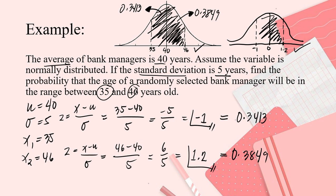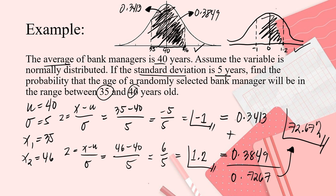So, what will you do? Since this is the whole area being asked, you will, yes, you will add the 2. So, 0.3413 plus 0.3849, that is 0.7267. And, if what's asked is in percentage, of course, multiply by 100. The answer is 72.67%, which is the measurement between 35 and 46.